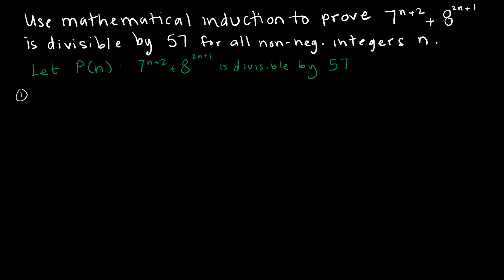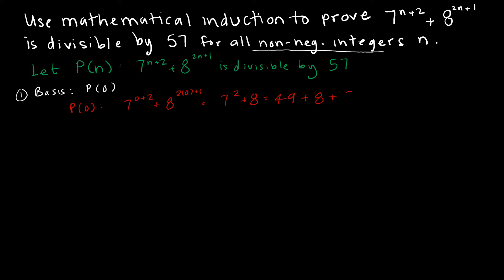So my basis step: where do I start? It says all non-negative integers, which means I have to show P of 0. P of 0 would represent 7 to the 0 plus 2 plus 8 to the 2 times 0 plus 1, which is 7 squared plus 8, which is 49 plus 8, which is 57. And 57 is divisible by 57, so I've shown that that's true.